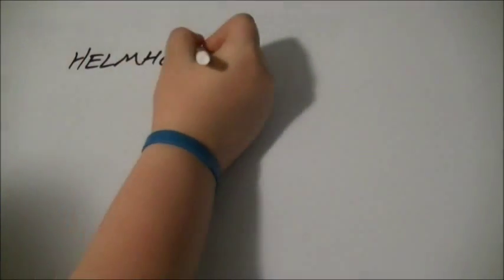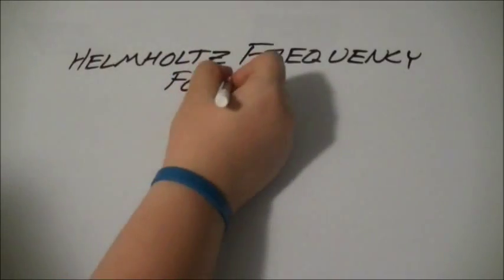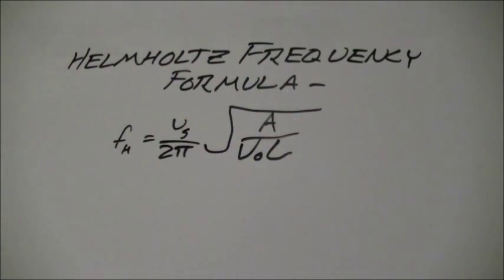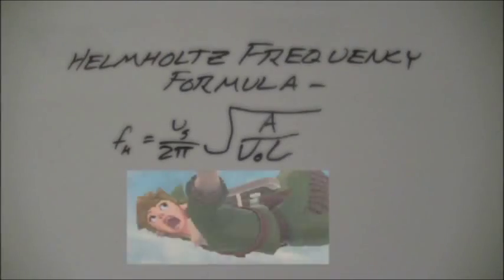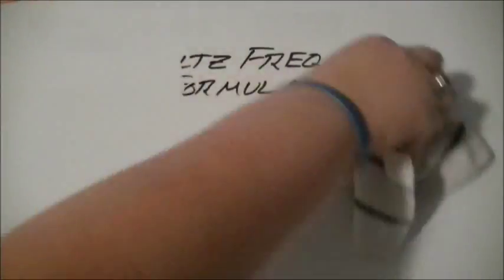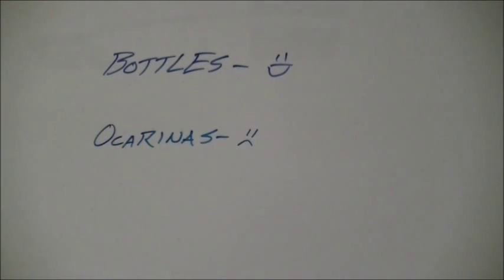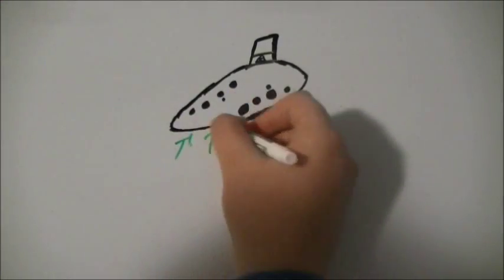All these variables come together to make the Helmholtz frequency formula, which is Fh equals Vs over 2π times the square root of A over V0L. Which is scary! I'm scared! Once I got over being scared of that, I realized that that formula would work fine for resonators that produce only one frequency, like empty bottles for instance, but not so well for ones that can produce multiple frequencies, such as ocarinas, which leads into what I did.